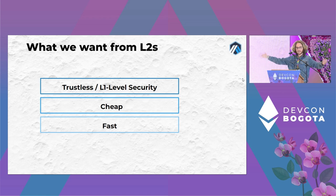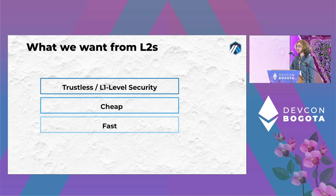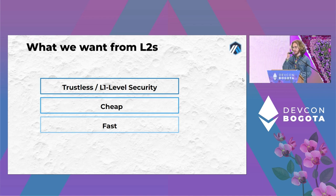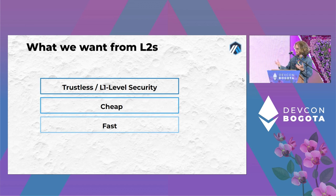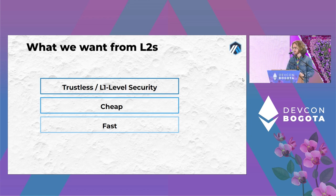The scaling part means improving the status quo of what Ethereum is like to use. Notably, we want it to be cheaper — when layer one gets congested it gets expensive — and we'd also like it to be faster, because when layer one gets congested it becomes slow. An ideal layer two would do all of those things.